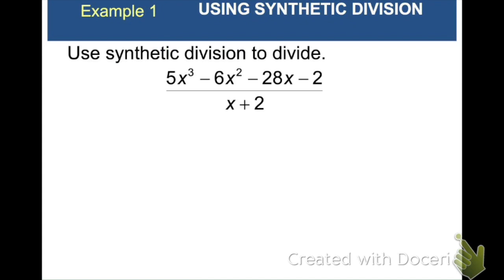Example 1, use synthetic division to divide. So the first thing that we have to do with synthetic division is set up our bracket. We're always going to draw this first as kind of a structure for our synthetic division. Next, we're going to take the binomial x plus 2, and we're going to set it equal to 0 and solve. Or you can think of it as just changing the sign of the 2. And that's the number that's going to go out front here.